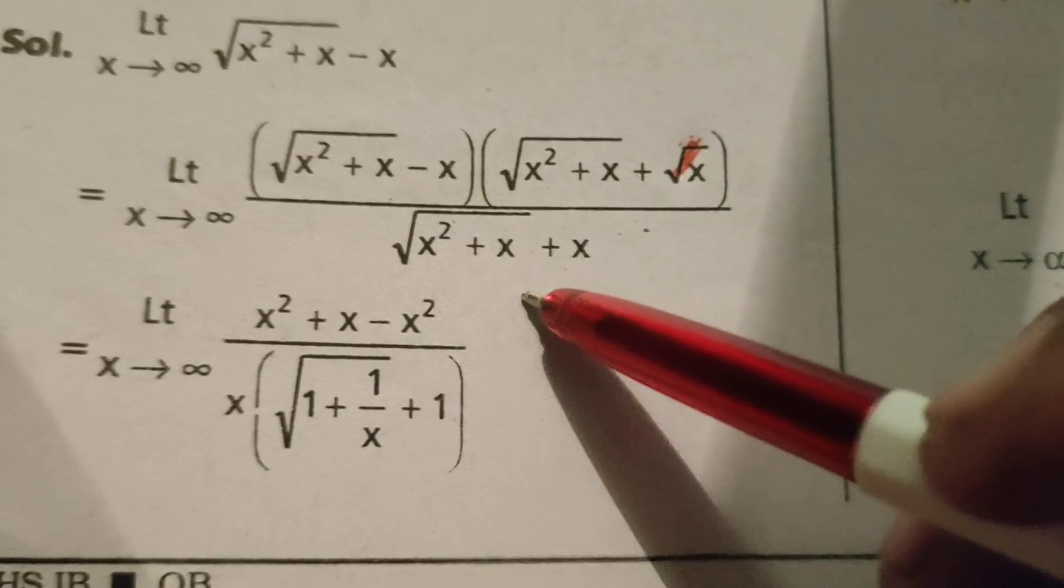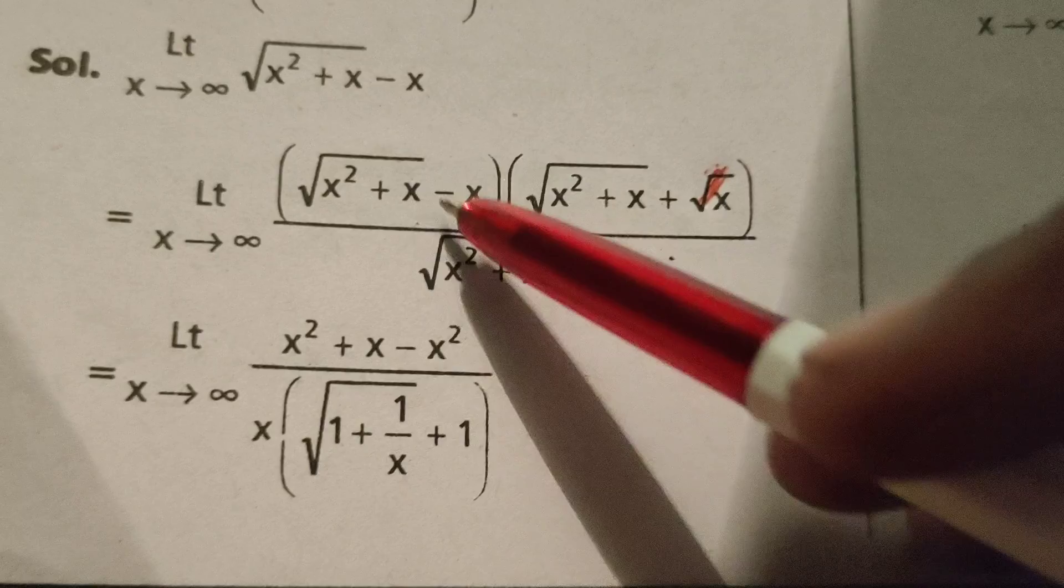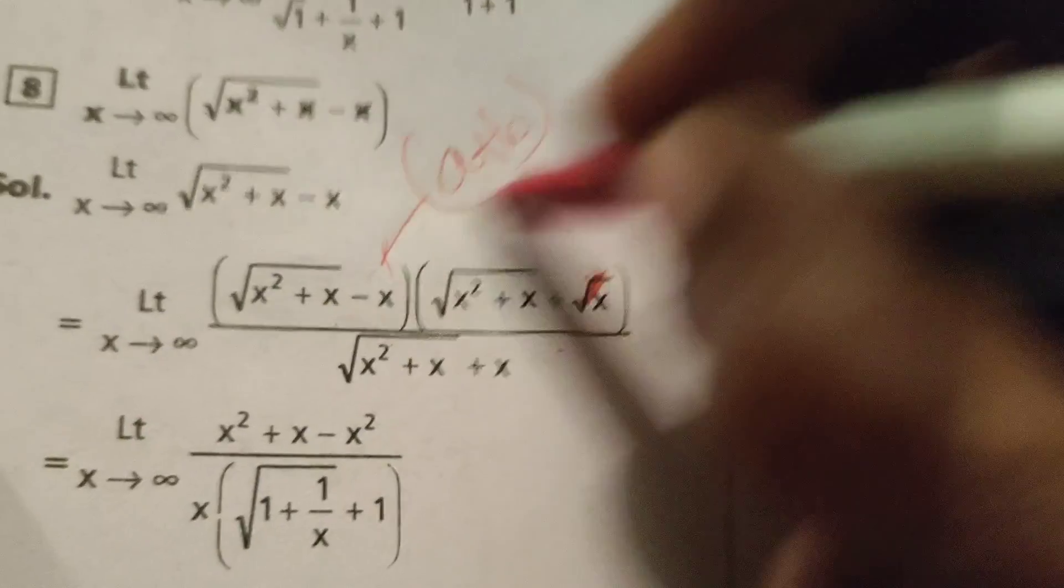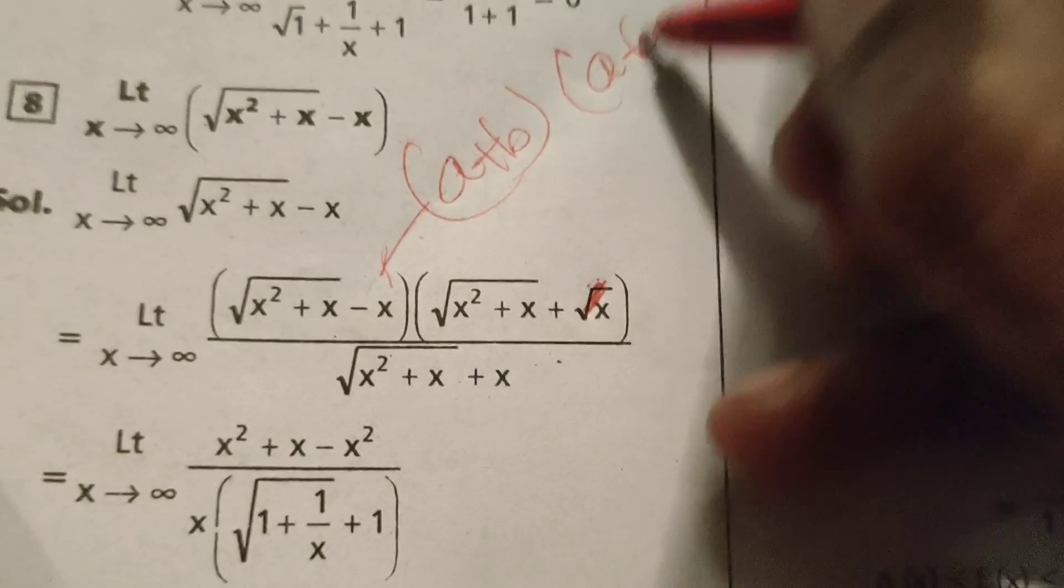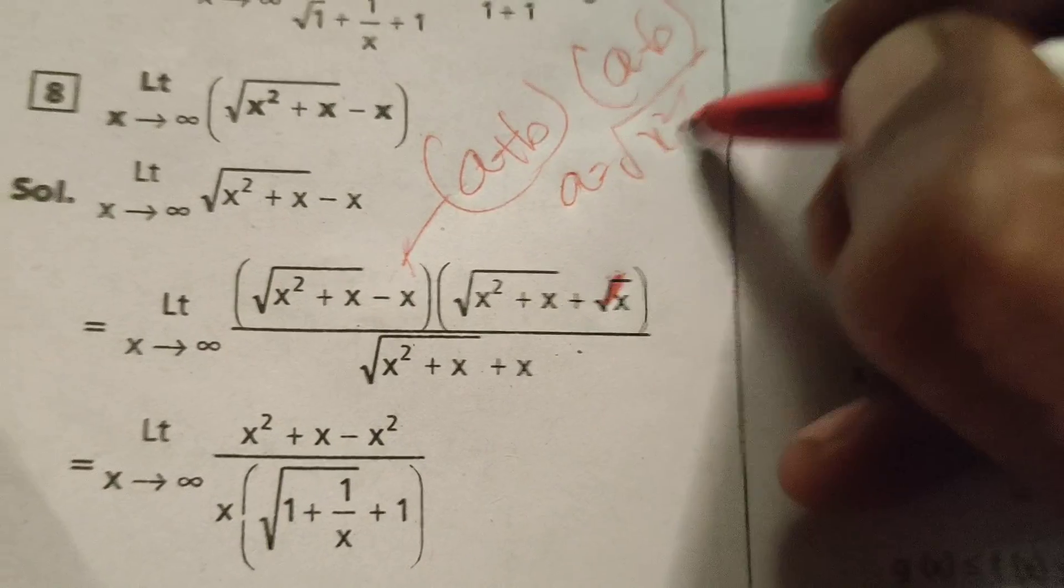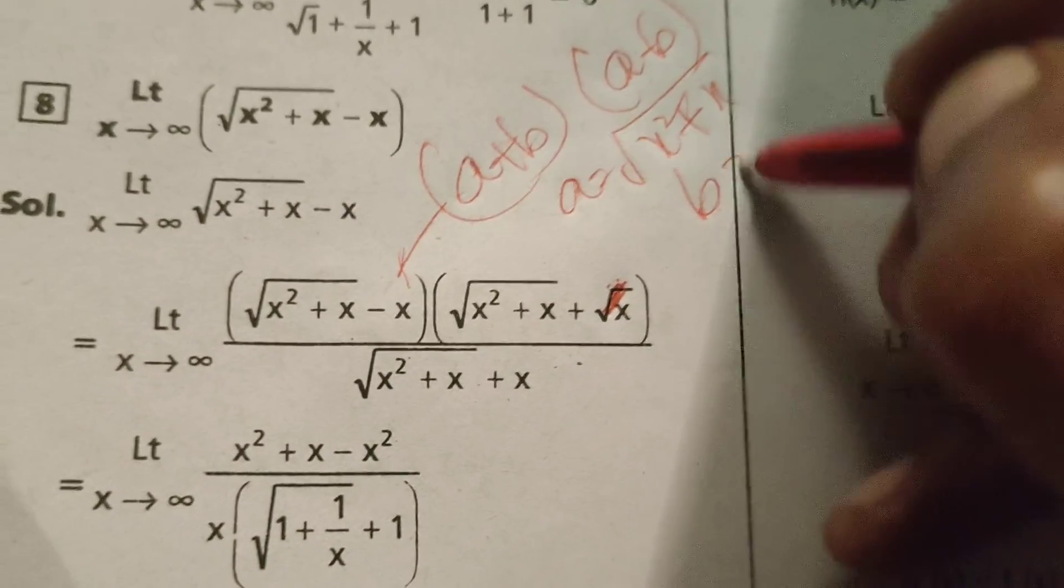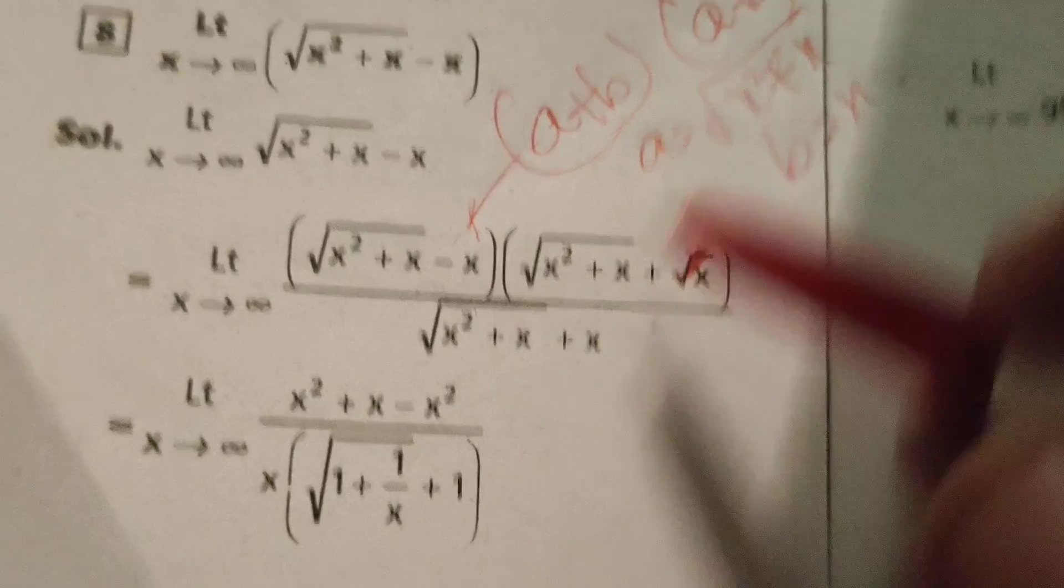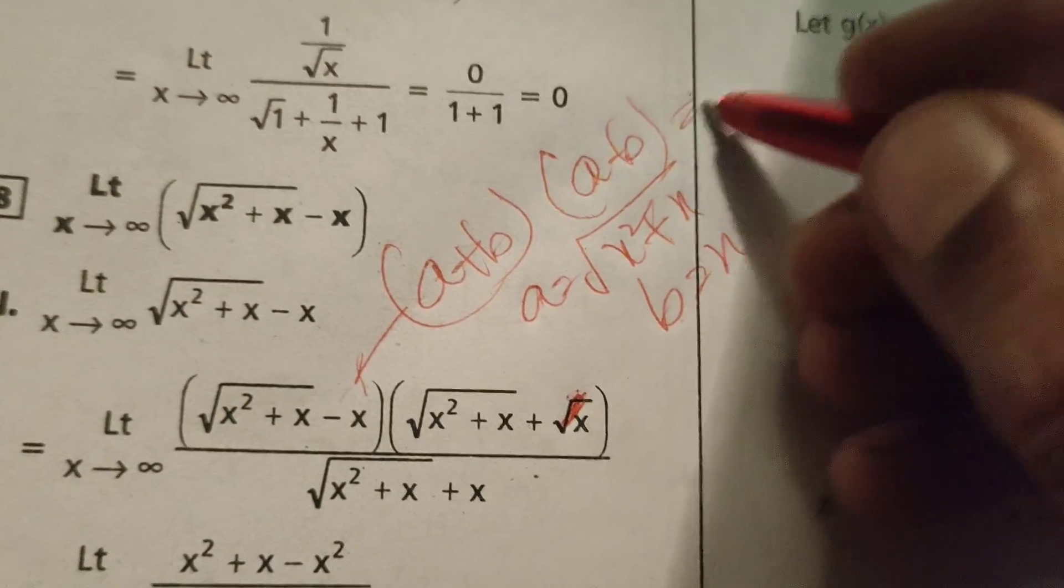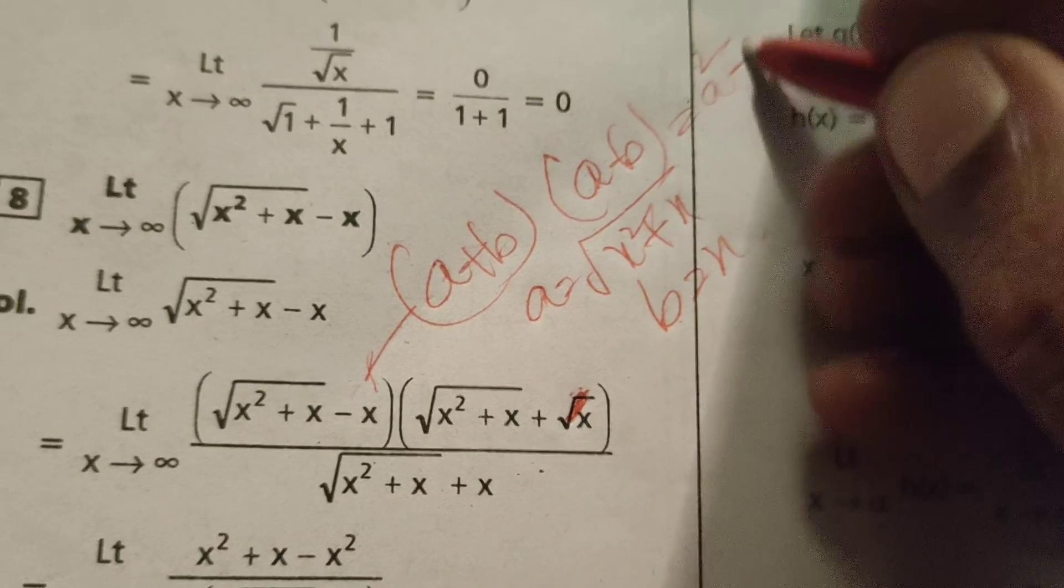Multiplying numerator and denominator using the formula here. Here a plus b into a minus b. a means root of x square plus x here, b means x. Therefore a plus b into a minus b means a square minus b square.